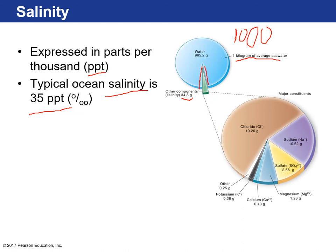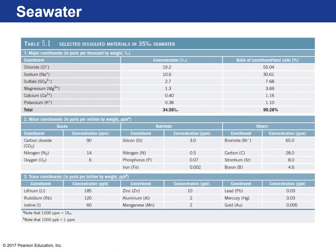If you had a kilogram of seawater and let it evaporate away, you'd have approximately 35 grams of substance left behind. Breaking down those components by ion: chloride makes the majority, then sodium — those typically bond together as sodium chloride (salt). Then there's sulfate, magnesium, calcium, potassium, and a slew of other elements making up the rest.